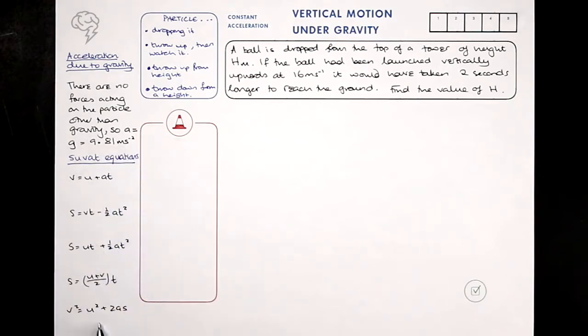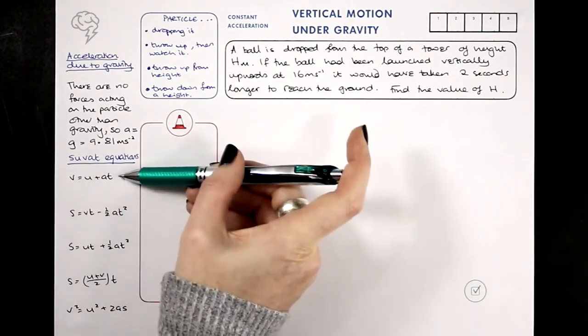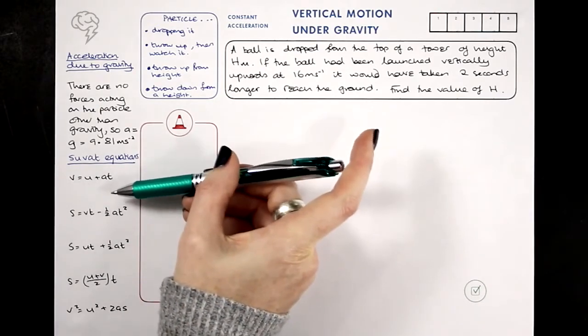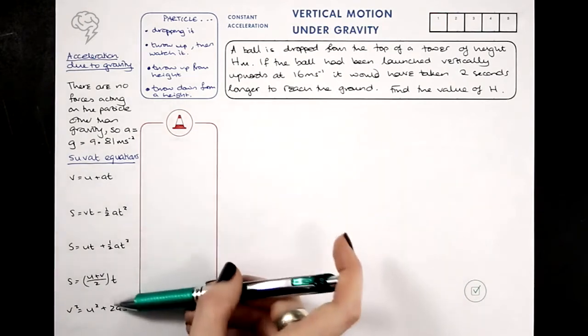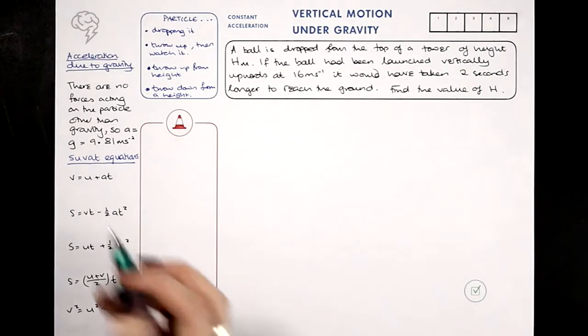We're going to need our SUVAT equations, and these five equations are true for any particle moving with constant acceleration, so for example, something falling under gravity. Going up or down, it's still falling under gravity.